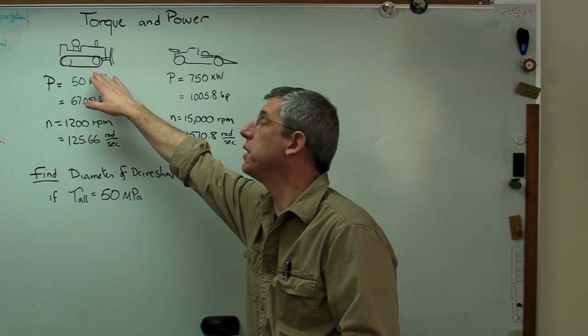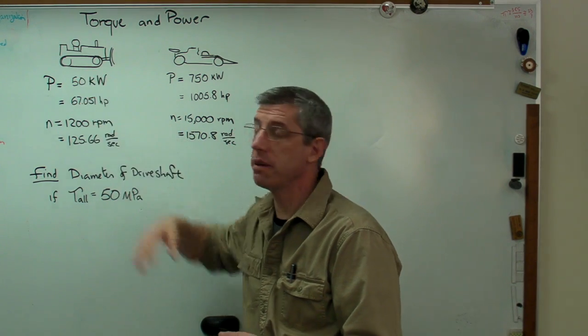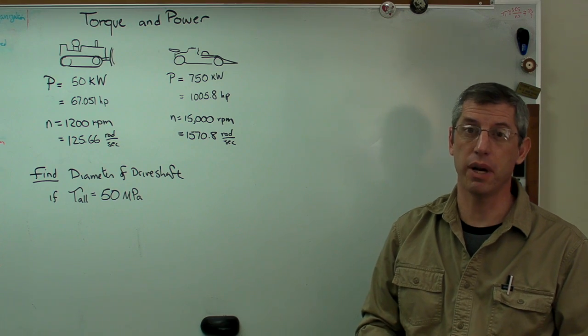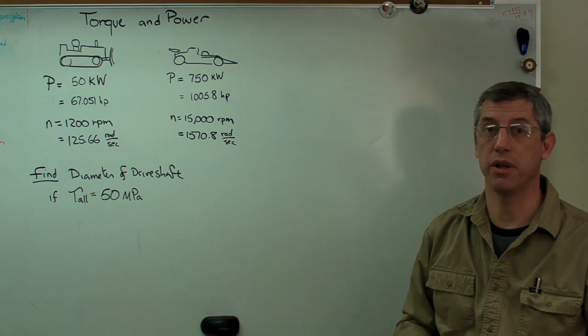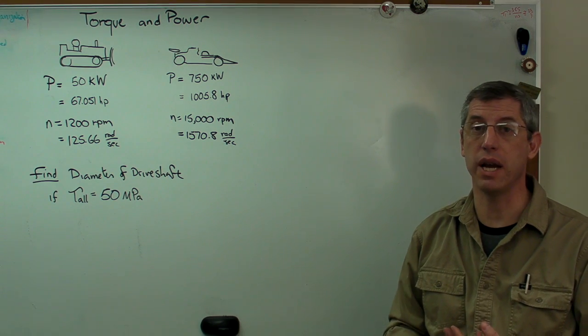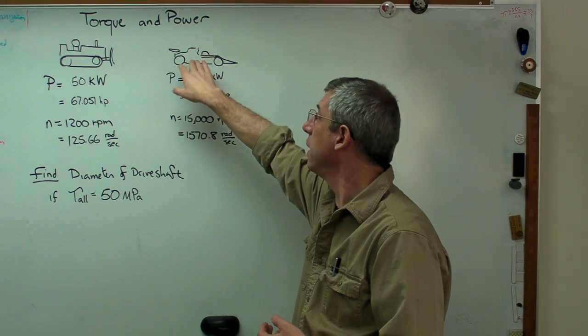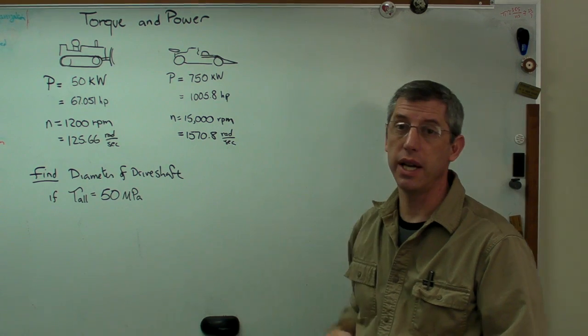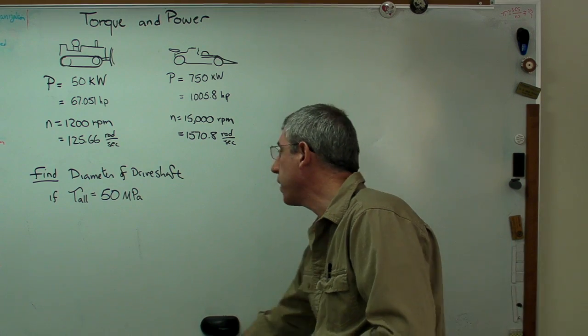The bulldozer has a transmission that gears the engine down very far. The maximum speed on a bulldozer is a few kilometers an hour, while the race car may be 300 kilometers an hour, around 180 miles an hour. The bulldozer can push around big piles of dirt at low speed. The race car can't even get out of the pits on its own. When it's leaving the pits, it has to be pushed out by the pit crew.